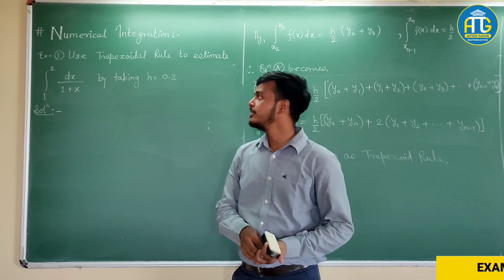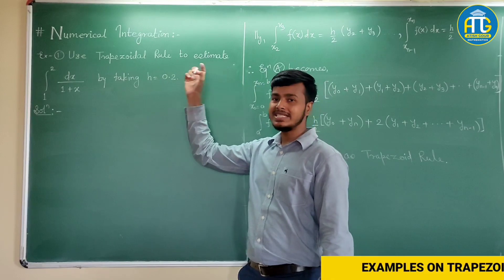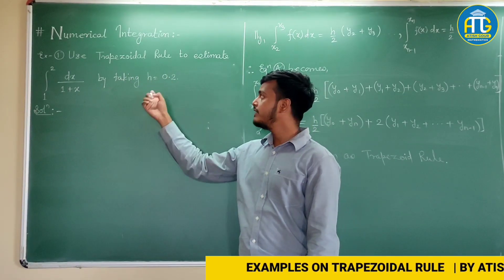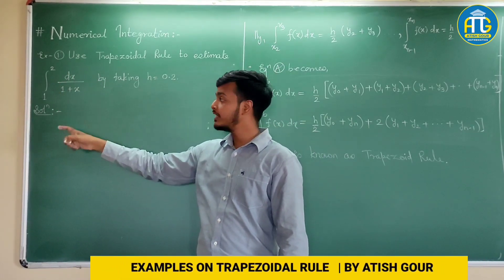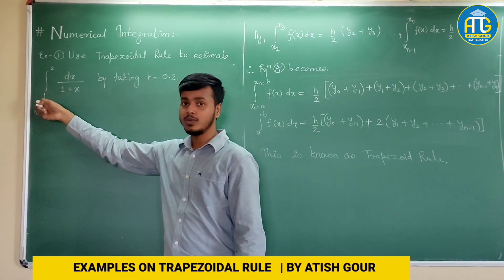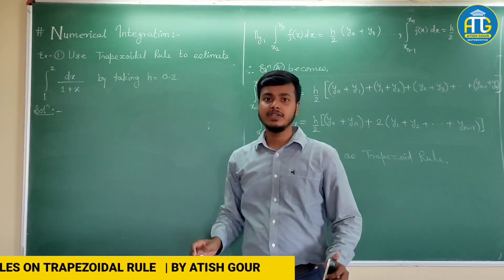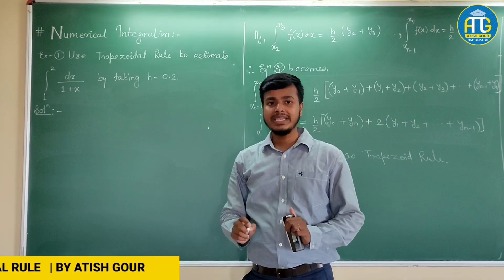Let us see the very first example. Example number 1 says use trapezoidal rule to estimate this by giving h is equal to 0.2. We are given the value of h, we are given the function, we are given the limits also, this is lower limit a, upper limit b. Everything is given to us but we are not given the numerical data.